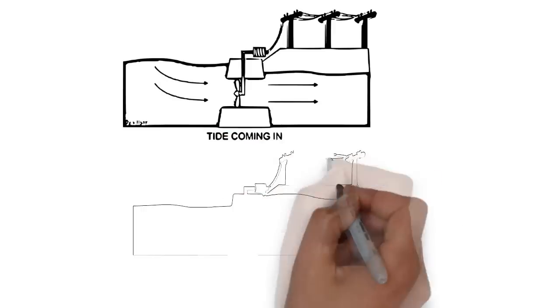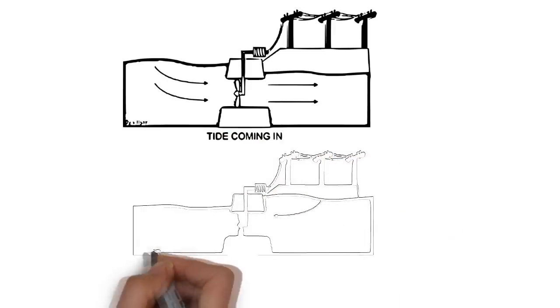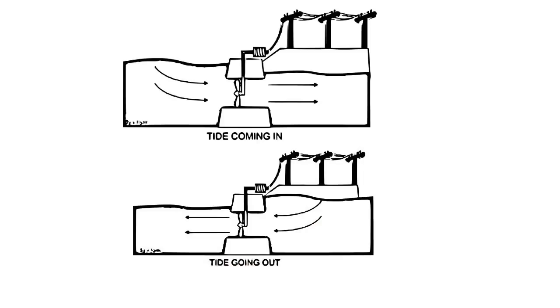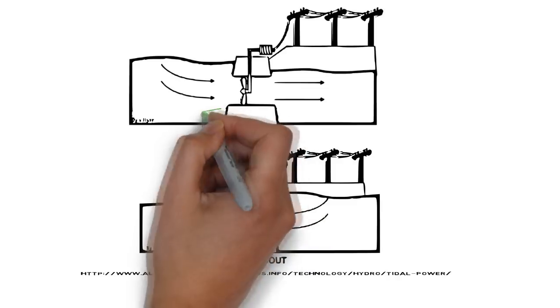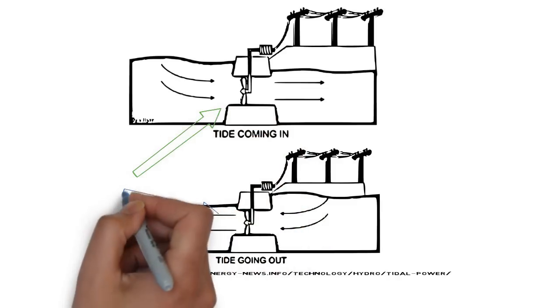Tidal barrages are very similar to the technology used in a hydroelectric dam, except that they are much larger as they are built across a large stream or bay. This method blocks off the water source with a dam or barrage.